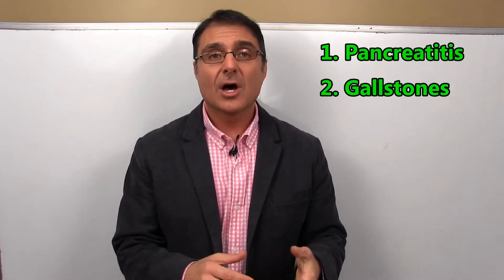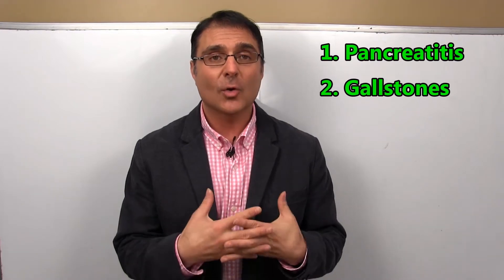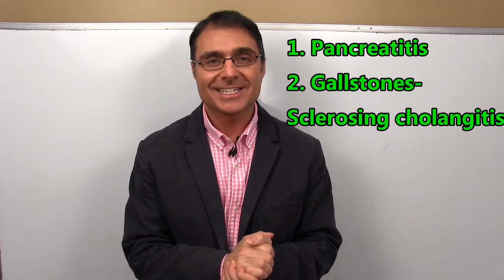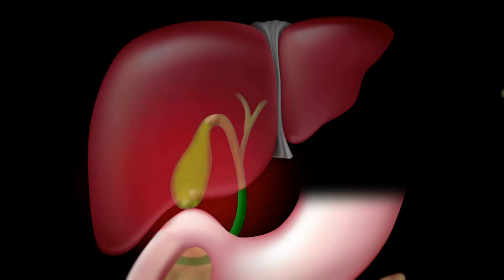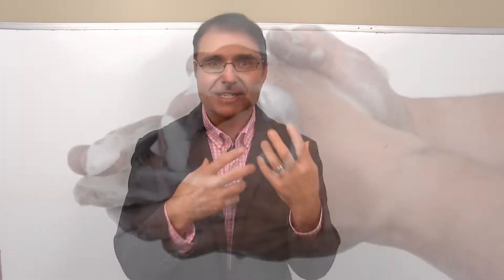The second one is gallstones or gallbladder stones that get lodged in the bile duct, or a condition called sclerosing cholangitis, which is when scars start to form in the bile ducts. That interferes with the ability of the gallbladder to get bile into the small intestines. You need bile to digest your fat — bile is kind of like soap; it mixes up with the grease and gets the grease away.